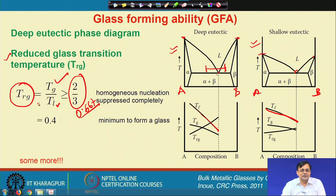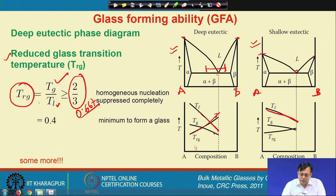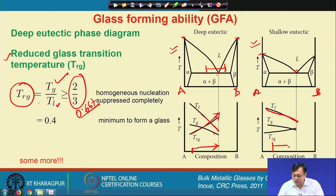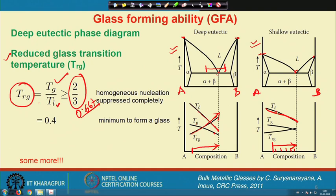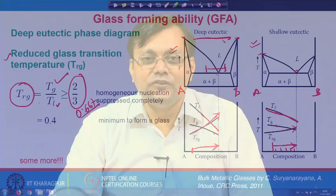In the deeper eutectic, the reduced glass transition temperature T_Rg increases as you move toward the eutectic composition, meaning glass forming ability increases. In a shallower eutectic, if you move across different compositions and measure T_g and T_l, T_Rg does not increase much. Therefore, a deeper eutectic is always beneficial in a phase diagram in order to give a better glass-forming composition.